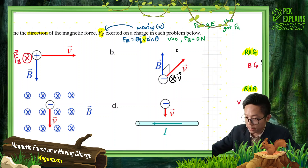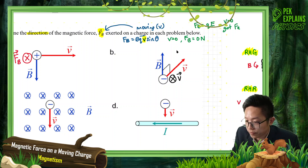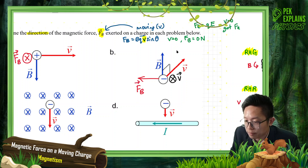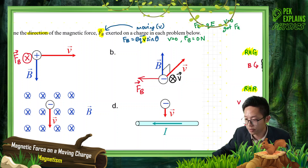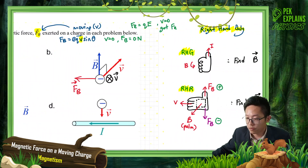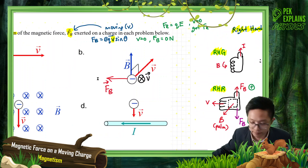So for Question B, my force is to the left because my thumb is to the right. For a negative charge, the force must be opposite the thumb — that's why it's to the left instead of to the right.